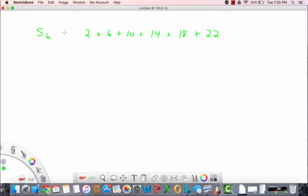This is S sub 6. Let's double check that that's right. We'll do it this way: 2 plus 22 is 24, 6 plus 18 is 24, and 10 plus 14 is 24. So we have 24 plus 24 plus 24, which is, you guessed it, 72.